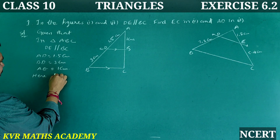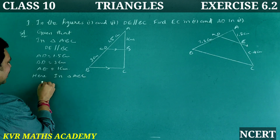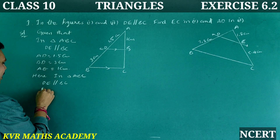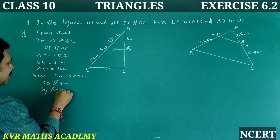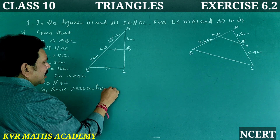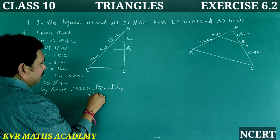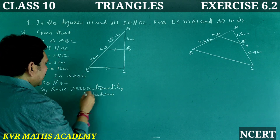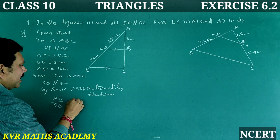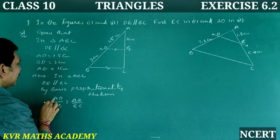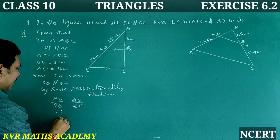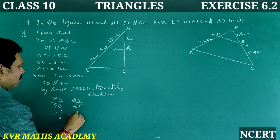In triangle ABC, DE is parallel to BC. By the Basic Proportionality Theorem, AD by DB is equal to AE by EC. Substituting: 1.5 by 3 is equal to 1 by EC.